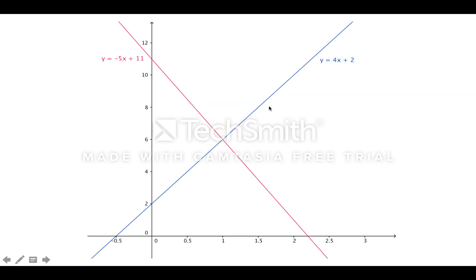So if we were to graph the lines, here's the first line y equals 4x plus 2. Here in blue, here's the second line y equals negative 5x plus 11. Right here, that point of intersection, we can see just from the graph that's the point 1, 6. That's our solution.